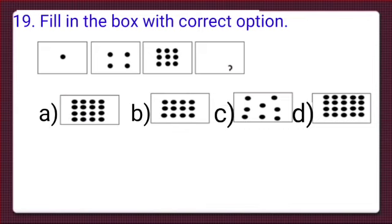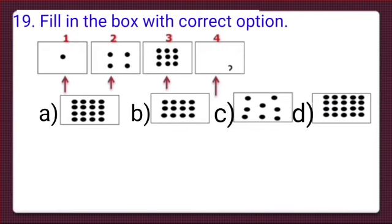The 4 options are given with 4 different boxes having different numbers of dots. In the first box there is 1 row of 1 dot, in the second box there are 2 rows of 2 dots each, and in the third box there are 3 rows of 3 dots each. So likewise, in the fourth box there will be 4 rows of 4 dots each — it is a pattern of dots. Option A has 4 rows of 4 dots, so option A is correct and we put a tick mark at option A.